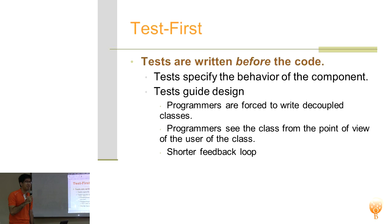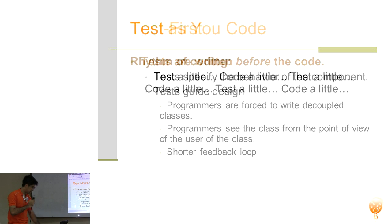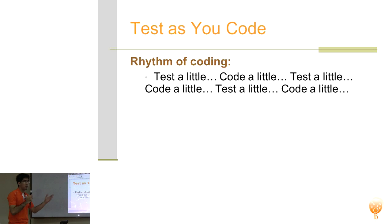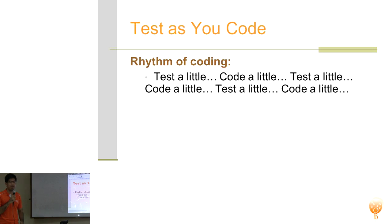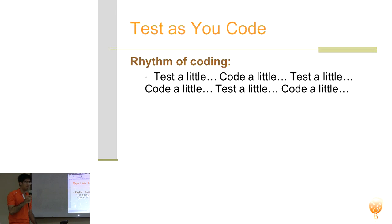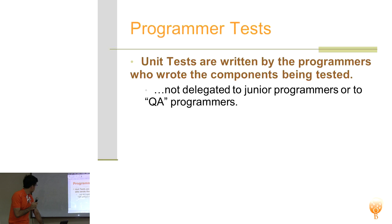You write a test and then it fails because you have no code written. Then you write your code to try to get your test to pass. The way it works: you write your tests, then you code a little to get them to pass. Then you notice maybe you didn't test everything and there's another case where the test doesn't work, so you write that test and get it to pass. Writing a test for a component is done by the programmer who's building that component — it's not something you delegate to QA people at the end of the project.